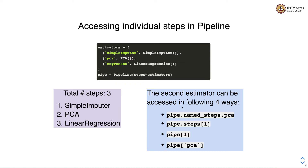The first step can be accessed as pipe.named_steps.simple_imputer. The second estimator can also be accessed by pipe.steps[1] — steps is an array storing the steps. We can also call pipe[1] to refer to the same PCA step, or use pipe['pca'] in dictionary notation. So there are four different ways to access the second component.